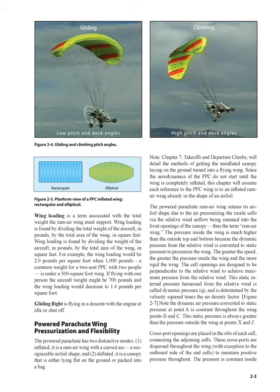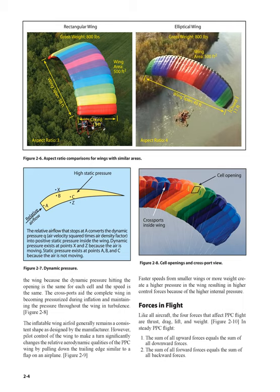The greater the speed, the greater the pressure inside the wing and the more rigid the wing. The cell openings are designed to be perpendicular to the relative wind to achieve maximum pressure. This static internal pressure harnessed from the relative wind is called dynamic pressure Q, determined by the velocity squared times the air density factor. The static pressure is always greater than the pressure outside the wing. Crossport openings are placed in the ribs of each cell, connecting the adjoining cells, and are dispersed throughout the wing to maintain positive pressure throughout. The crossports aid the complete wing in becoming pressurized during inflation and maintaining pressure throughout the wing in turbulence.